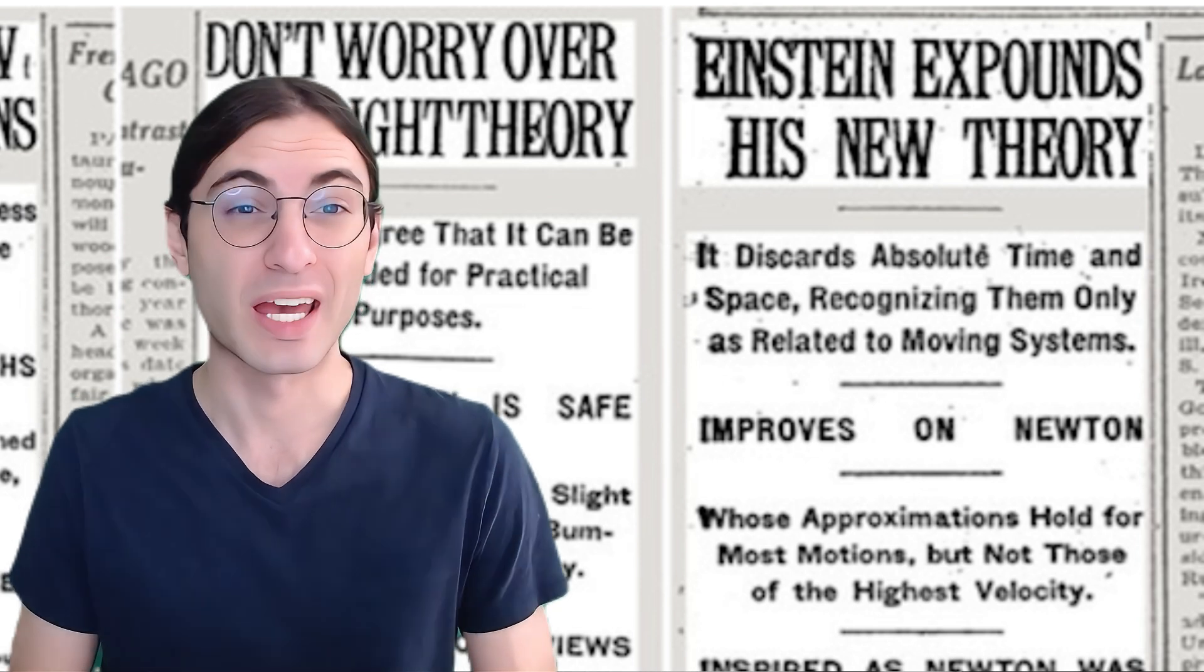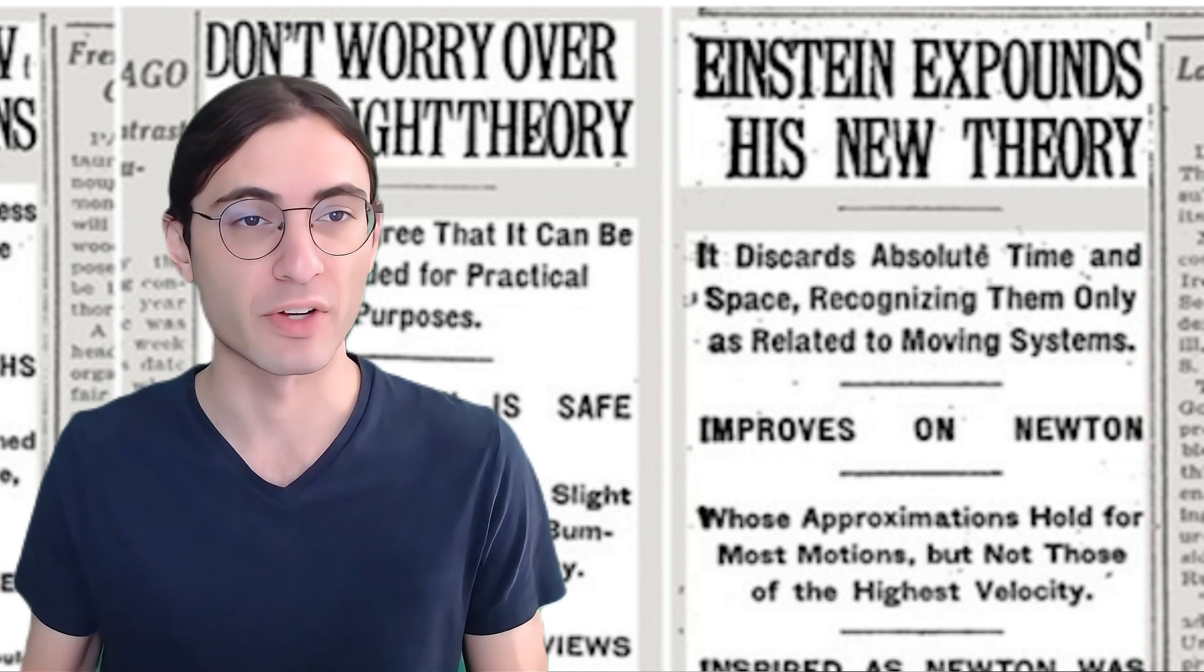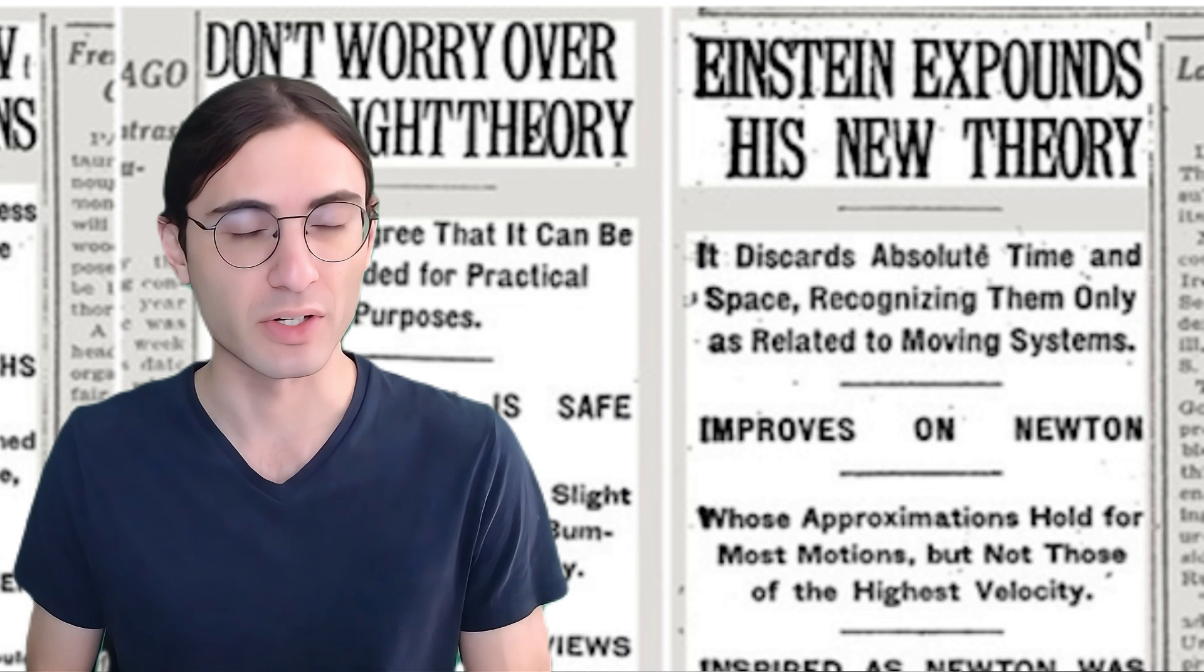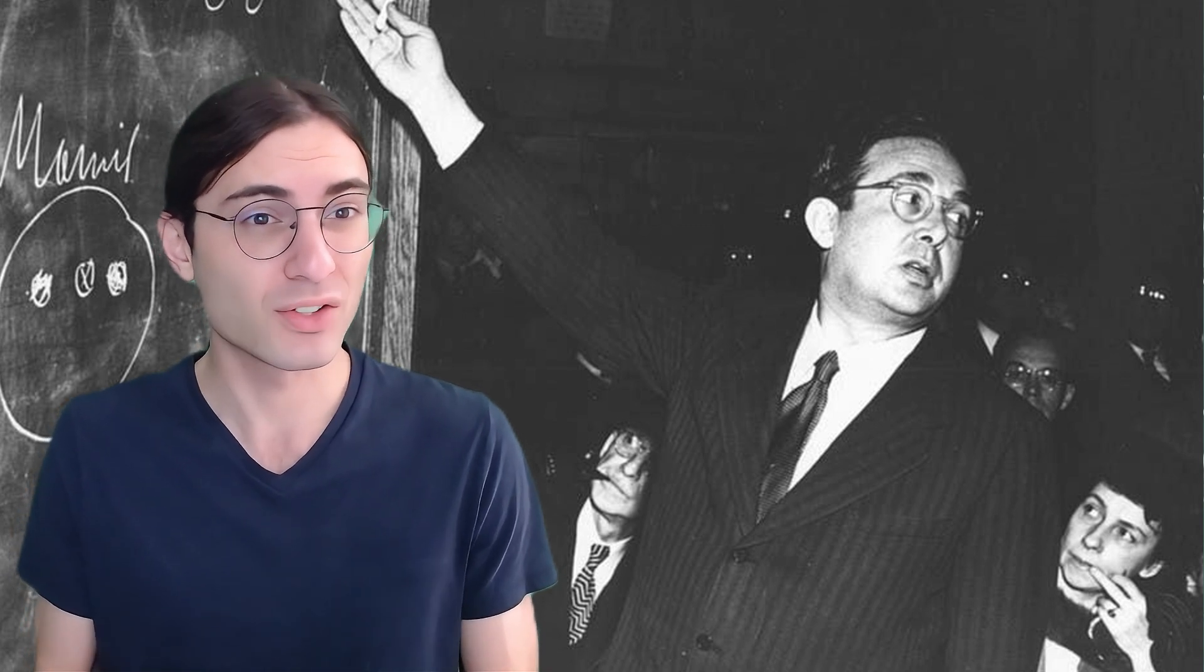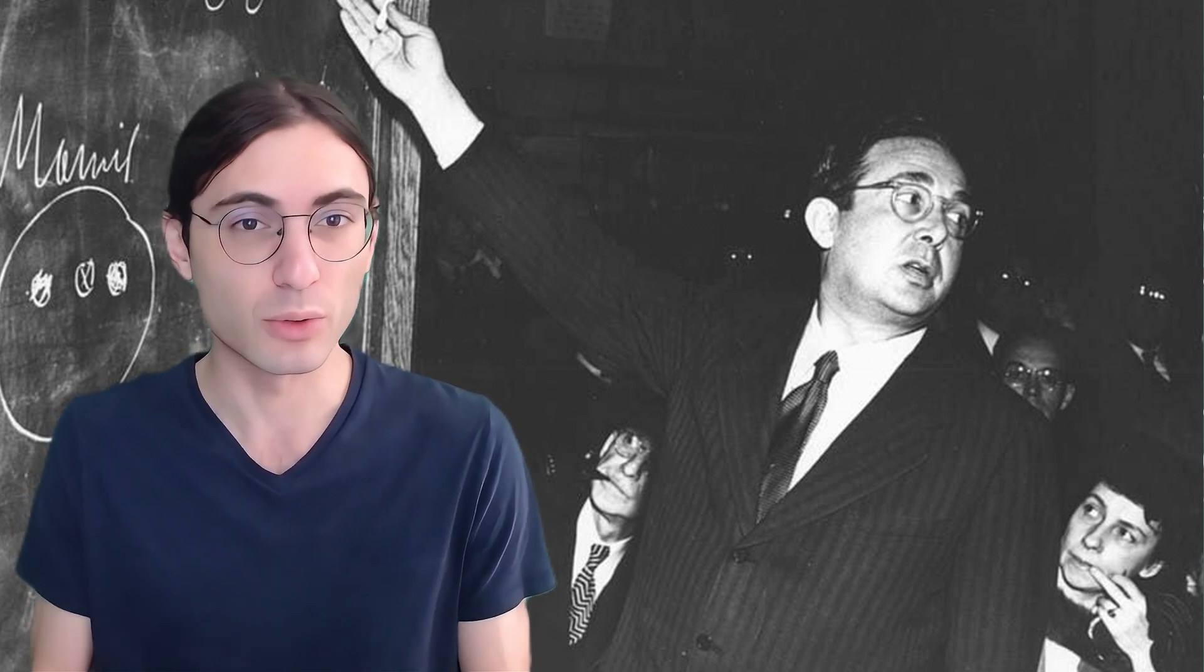Seven years after he became world-famous overnight for the observational validation of his general theory of relativity, Albert Einstein was shocked to read in his local German newspaper that an entire family was killed by a leak of poisonous gases from their refrigerator. Soon after, he called up his former student and friend, Leo Szilard. There must be a better way, he told him. By the way, it was only seven years after that that Leo Szilard actually first conceptualized the idea of a nuclear chain reaction.